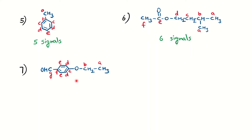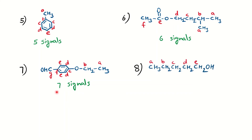Here you can find signals for CH3 and CH2 as separate signals. Since it is para-substituted, the aromatic ring gives you a total of four signals. And finally the aldehyde carbon gives a separate signal. So you can calculate and find out a total of seven signals for this molecule in C-13 NMR.